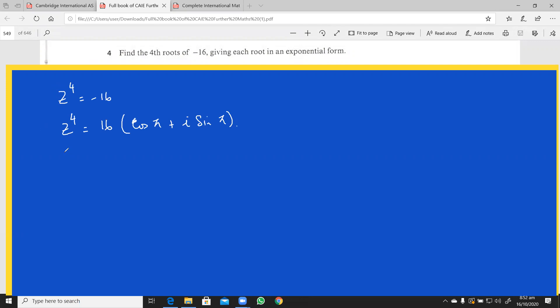So you can solve this, this is z raised to the power 4, this is 16 cos π plus 2k π plus iota sine π plus 2k π. Okay?